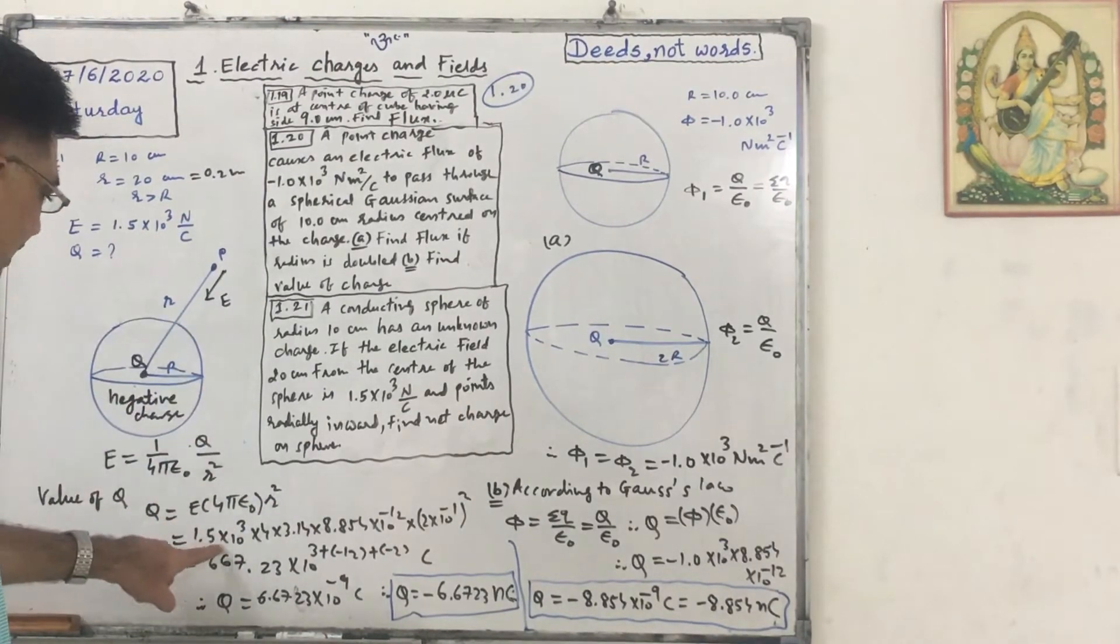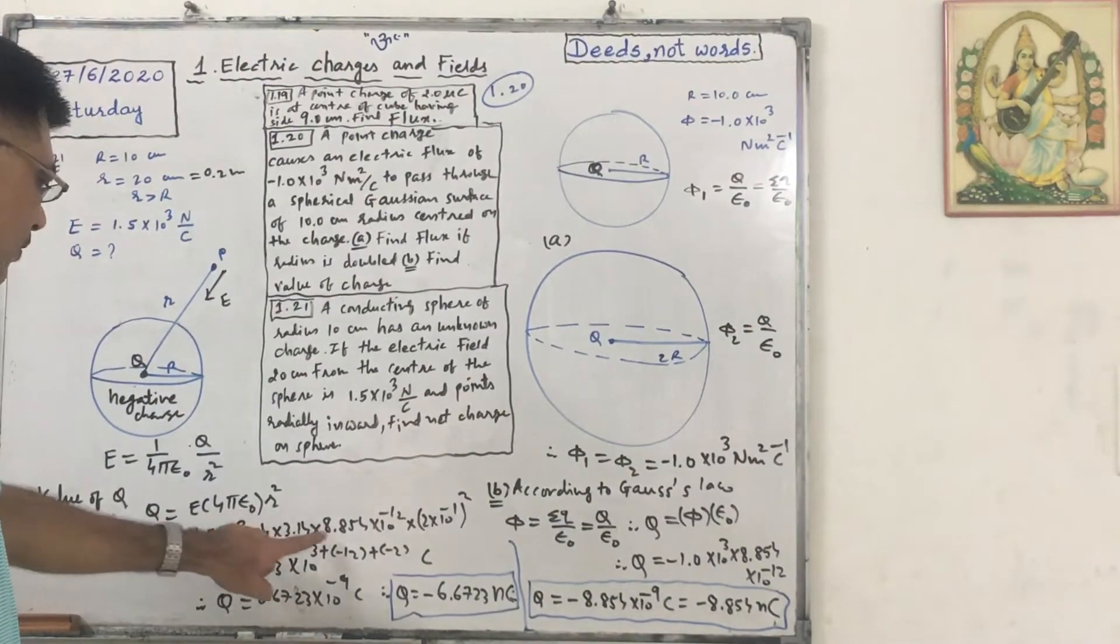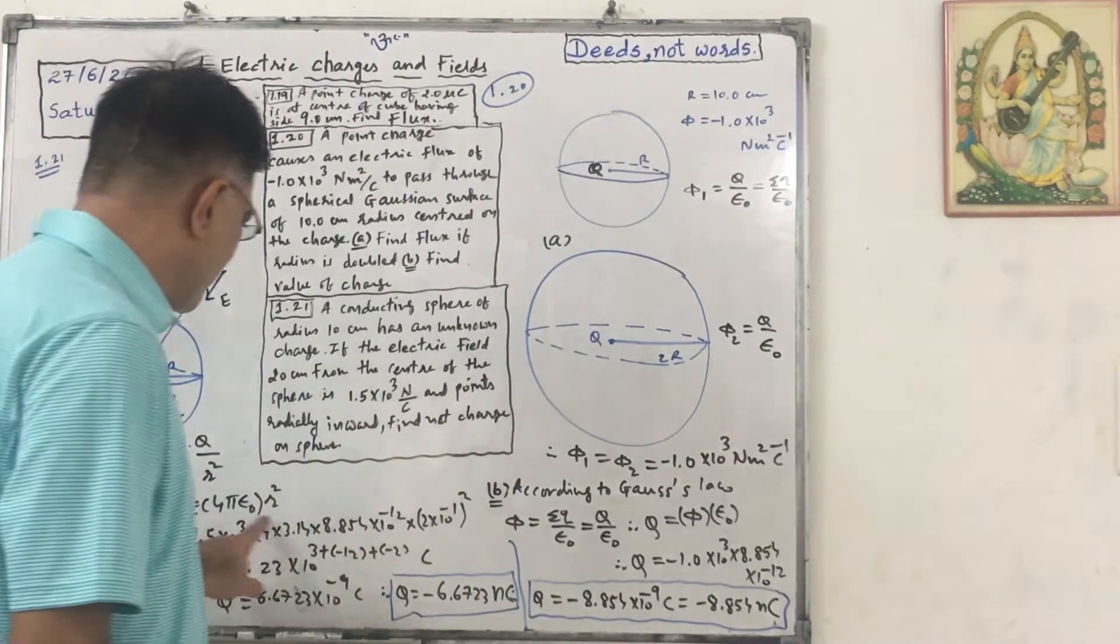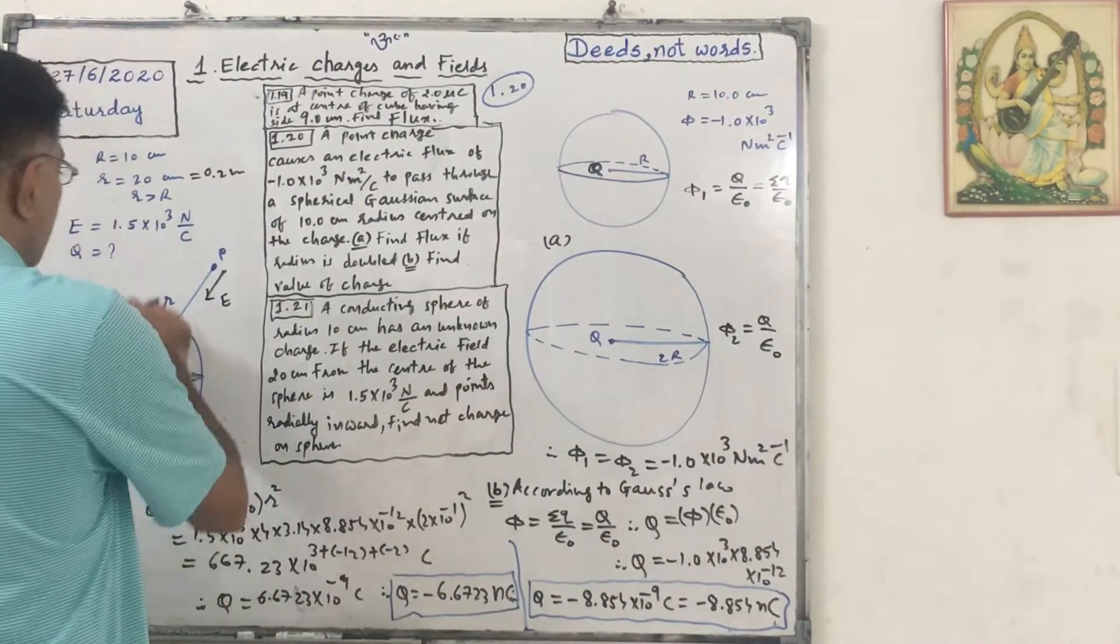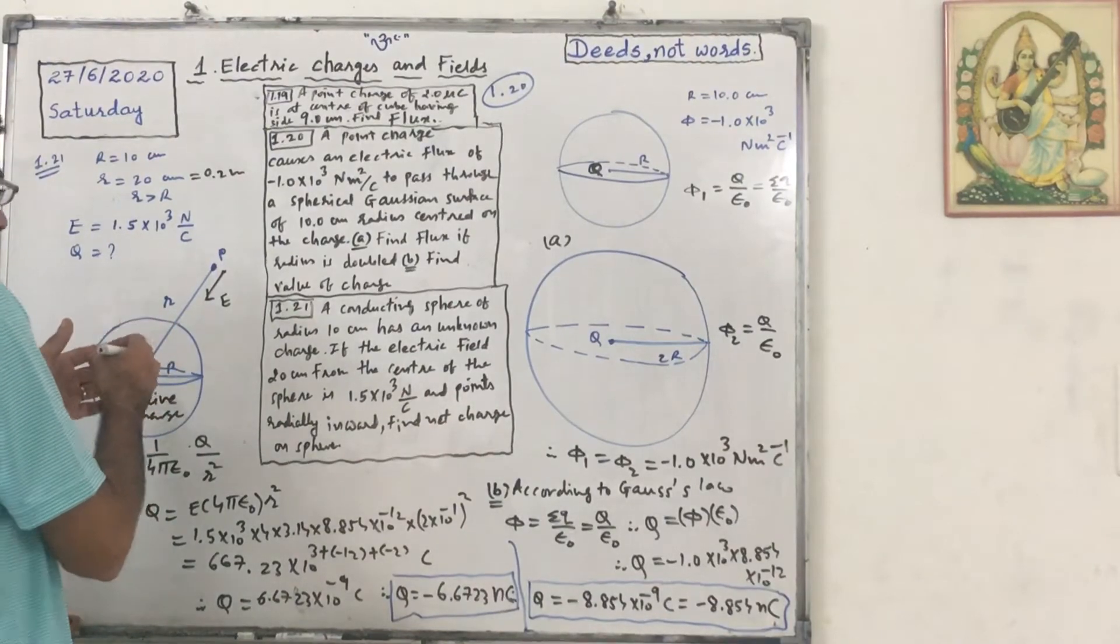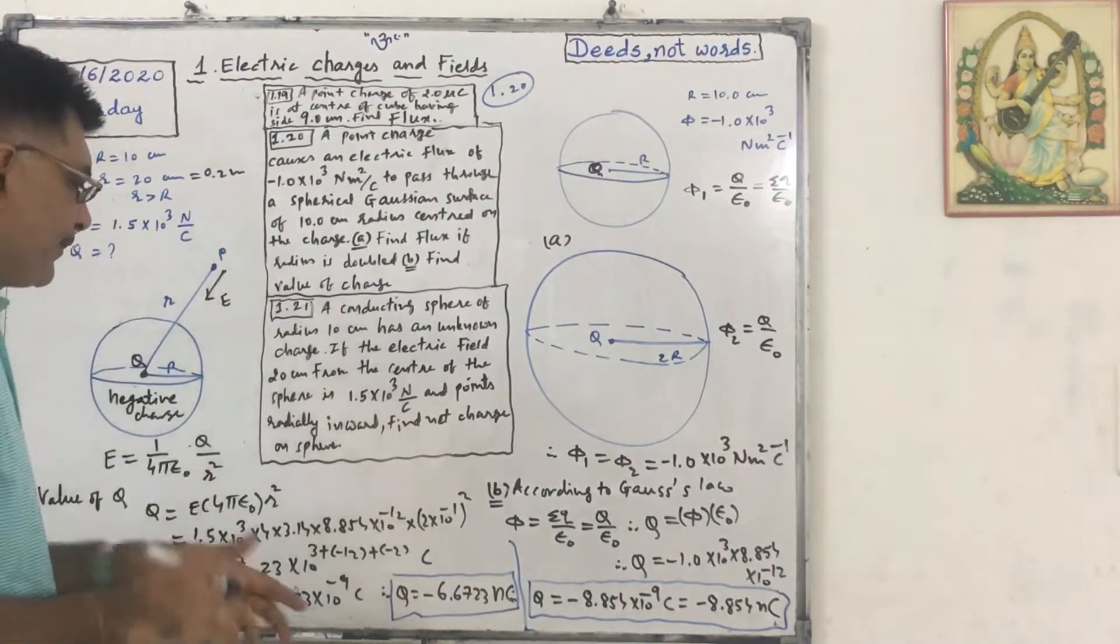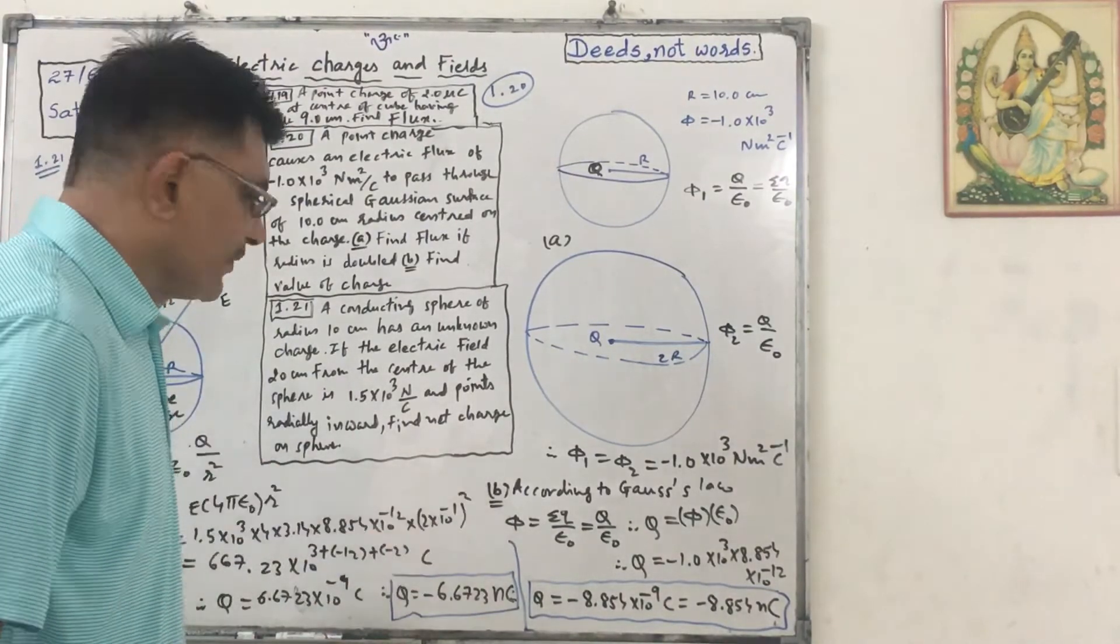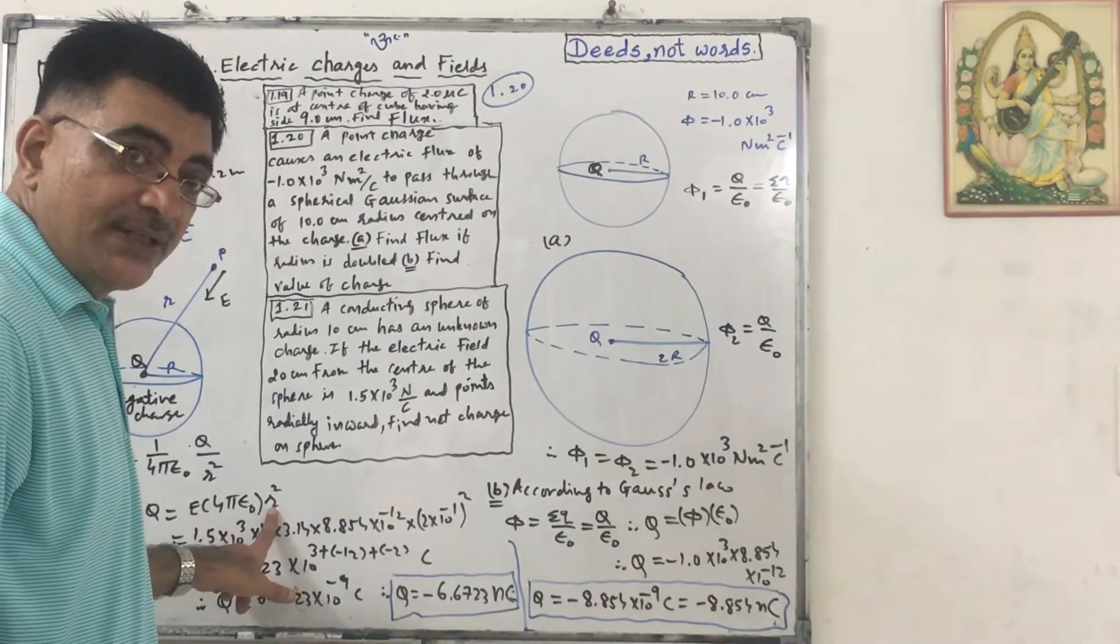E is 1.5 into 10 raised to 3, 4 pi is 3.14, epsilon naught is 8.854 into 10 raised to minus 12, radius - sorry, it is distance, small r, distance from the center, that is 20 centimeter, can be written as 0.2 meter, so 2 into 10 raised to minus 1 square. Here it is smaller, the distance is smaller.